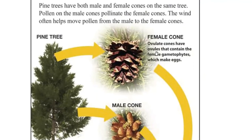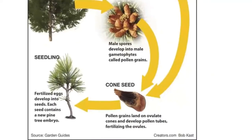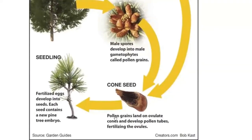Ovulate cones have ovules that contain the female gametophytes, which make eggs. Pollen grains land on ovulated cones and develop pollen tubes, fertilizing the ovules. The egg cells are then fertilized and the seeds will develop in the female cone.